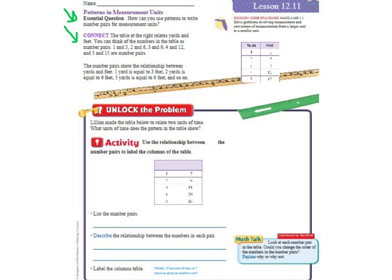Here in the connect it says the table at the right, this one right here, relates yards and feet. You can think of the numbers in the table as number pairs. One yard equals three feet. Those are a pair, one and three. Two yards equals six feet, so those are a pair, two and six. Three yards equals nine feet, so three and nine are a pair. Four yards equals twelve feet, so four and twelve are a pair. Five yards equals fifteen feet, so five and fifteen are a pair.